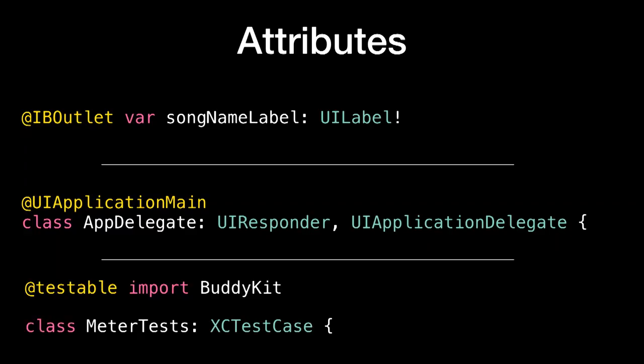UIApplicationMain is saying that this is the main class to instantiate when the application starts up. And @testable is a way of pulling in code to your unit tests so that you can access that API inside of your tests.